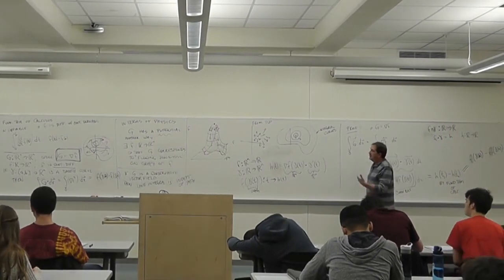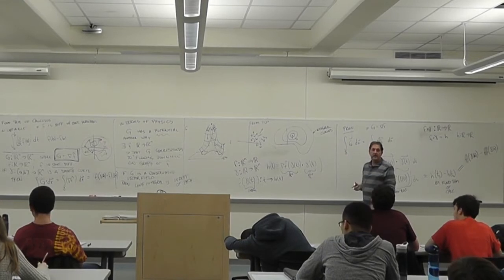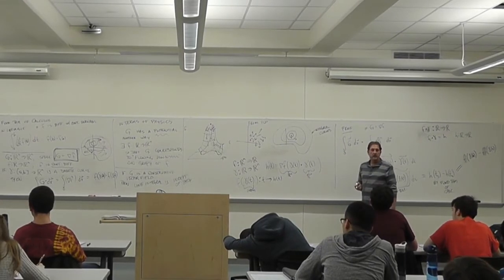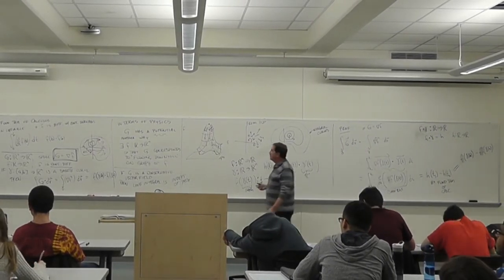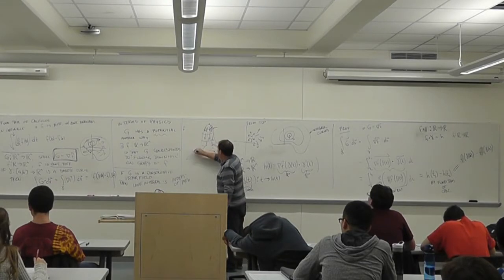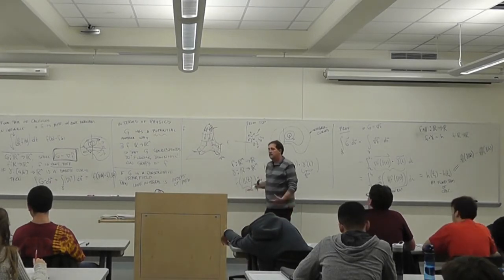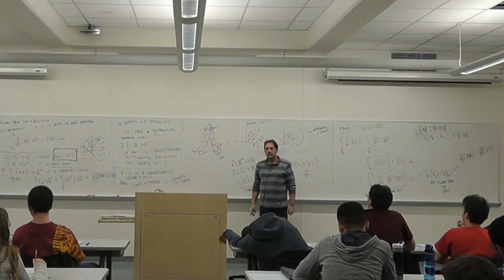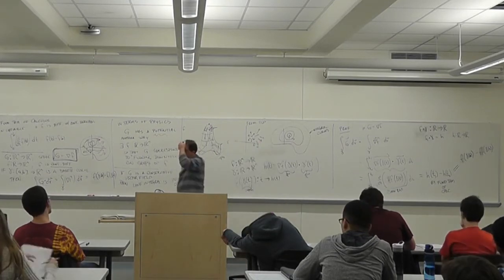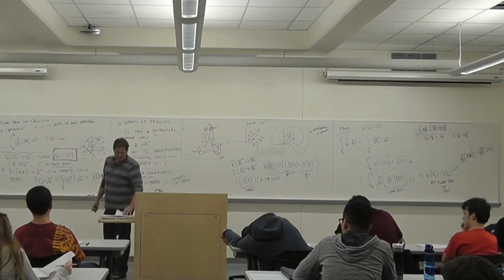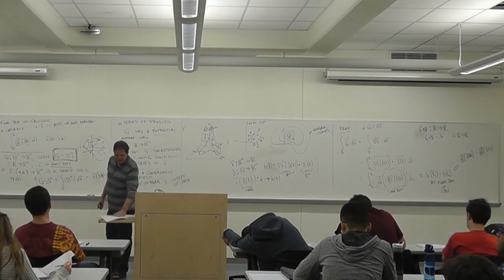In other words, you find the antiderivative and you evaluate at each end and you're fine. In terms of this picture, it's just this height minus that height. That's all. Sorry, I messed up in terms of who was what — I messed it up in the notes too.